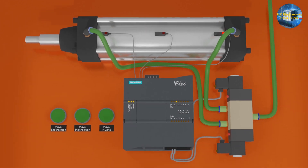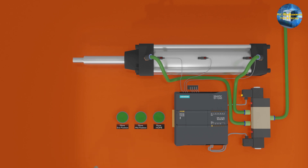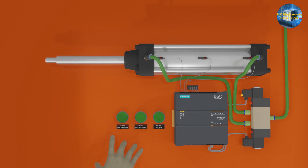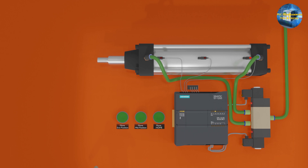The task is: if we press the mid position push button, the cylinder should move to the mid position. When we press the end position push button, the cylinder should extend fully up to the end position. And when we press the home push button, the cylinder should retract fully up to the home position.